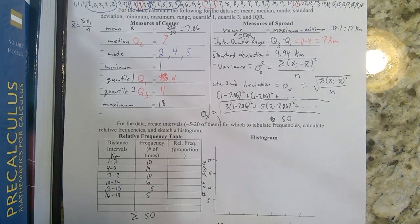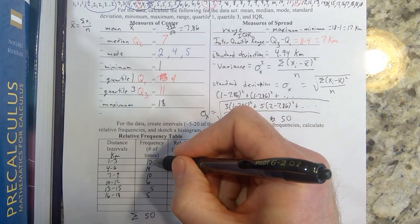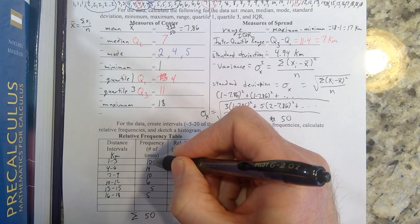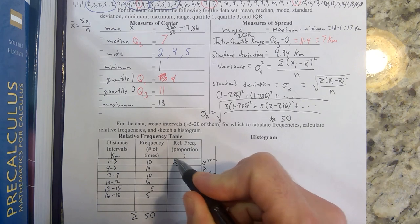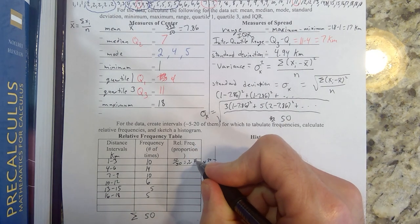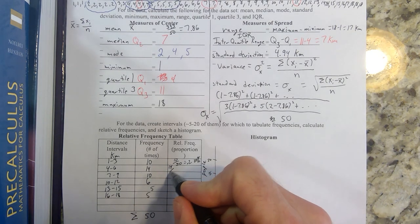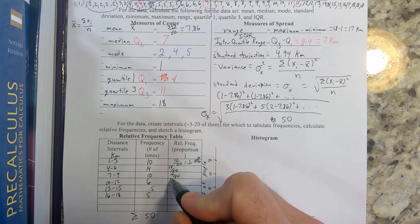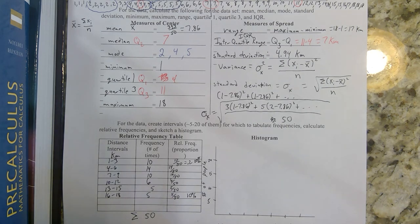Last column over here, the relative frequency. To get the relative frequency, you simply take how many people you had in a class or interval and divide it by n or 50. So 10 out of 50 people drove one, two, or three kilometers to work. In other words, 0.2 or 20% of the data landed in that interval. Then you would continue down and make all of these out of 50. 10% of the people drove the furthest 16, 17, or 18 kilometers to get to work.